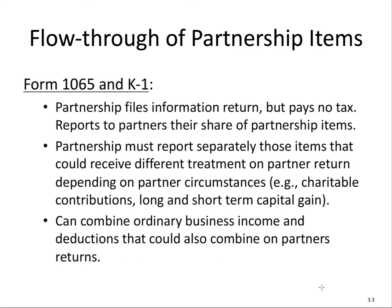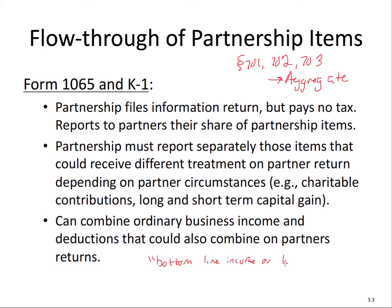The first topic is the flow-through of partnership items, related to Sections 701, 702, and 703 — really the aggregate theory of taxation. There are two types of items: the bottom line income or loss, versus separately stated items. Separately stated items are particular to the partner — different partners can have different treatments. Let me give you some examples to understand.